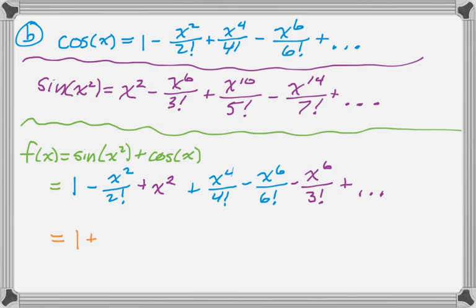And what I'm going to do here is I'm going to kind of factor. So with x squared, I have a coefficient of 1 and a coefficient of negative 1 over 2 factorial. So I'm going to do that, which is obviously just 1 half, but I'm leaving it like that for now.